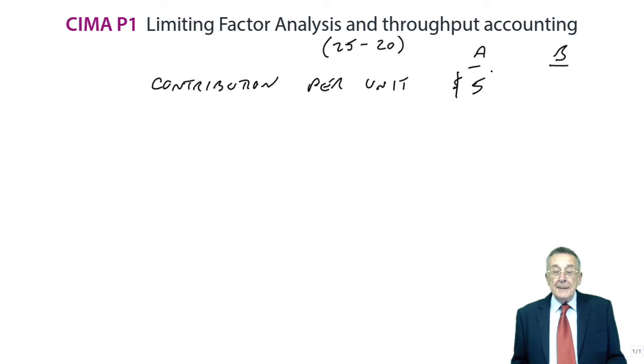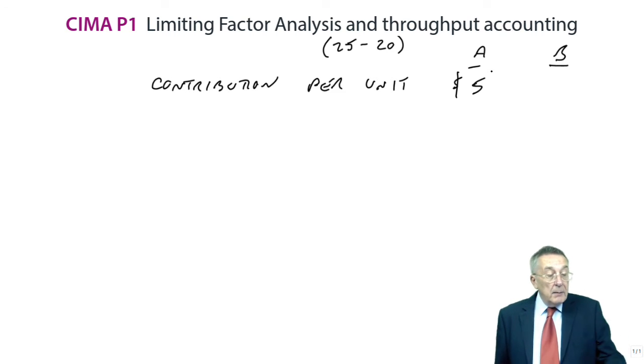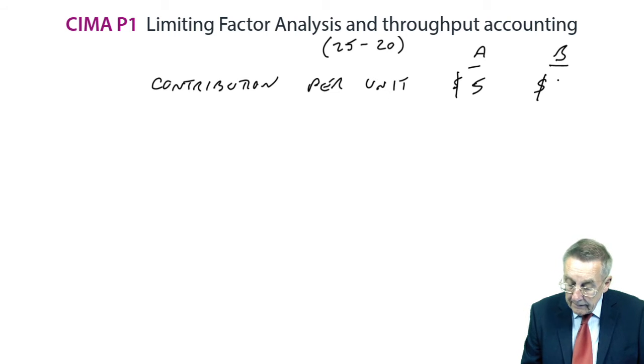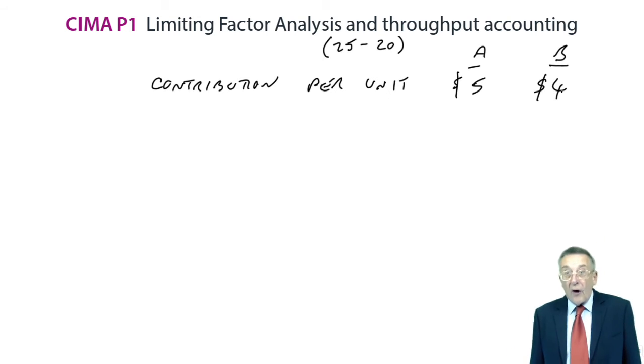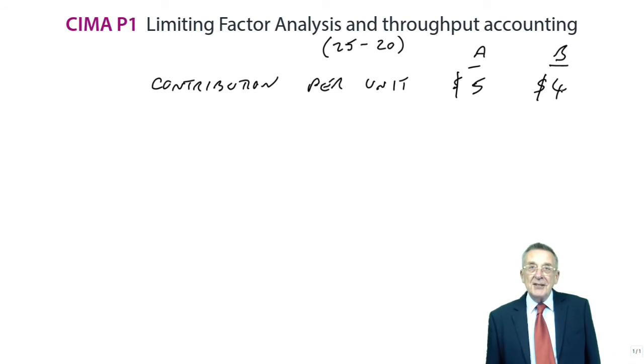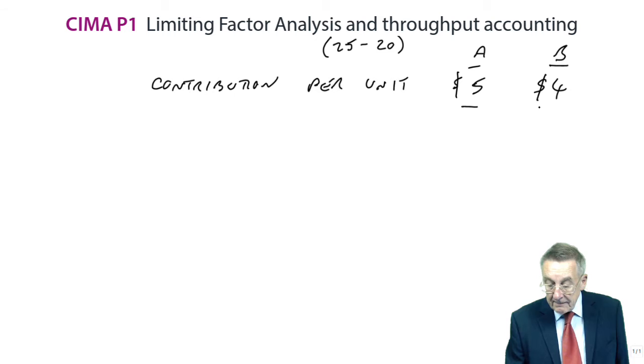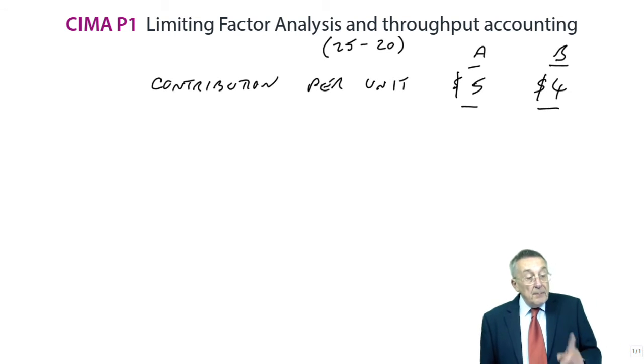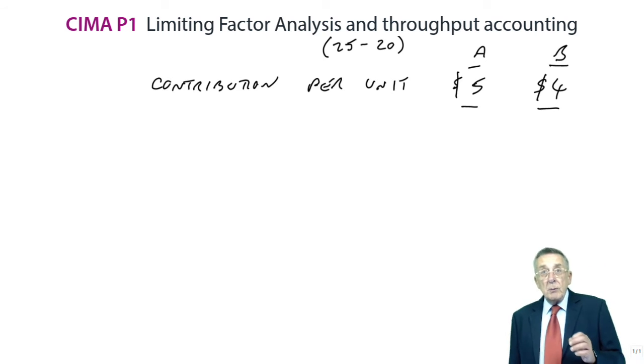And in a similar way, B, either selling price $28 less variable costs of $24, $4 a unit. Or profit at $2, add back the $2 fixed costs, $4 a unit. Well, back to where we were. We're trying to decide which is the better of the two to produce. A clearly looks the more profitable, it gives the higher contribution. But remember, our problem is limited hours. We want to use the hours in the most profitable way.